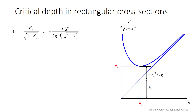An interesting result can be obtained for rectangular cross-sections. We have seen that the critical depth corresponds to the minimum specific energy, that we will call Ec. Using the definition of the specific energy, we can write equation 1, in which the last term represents the kinetic energy v² over 2g, but without alpha and the square root, both terms being close to 1.